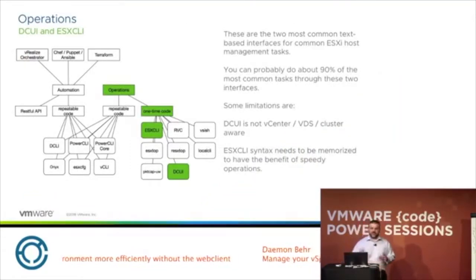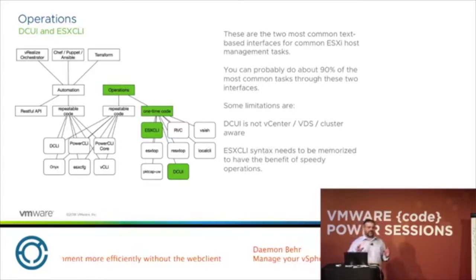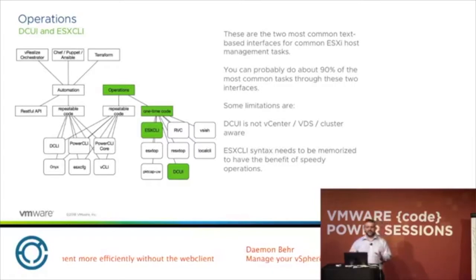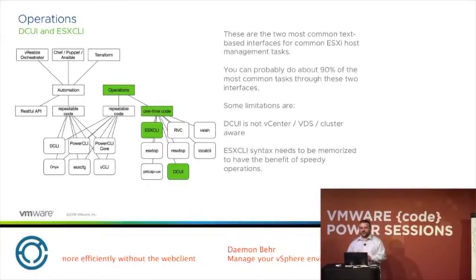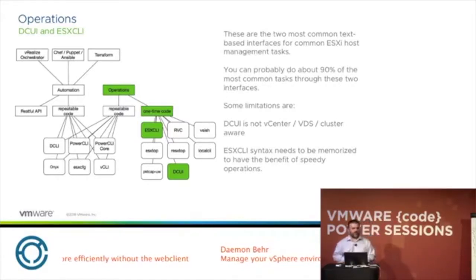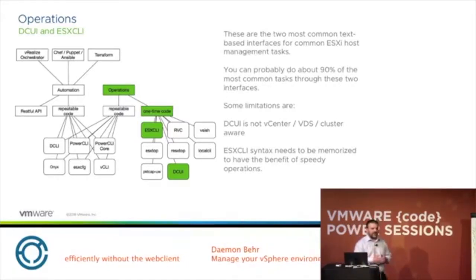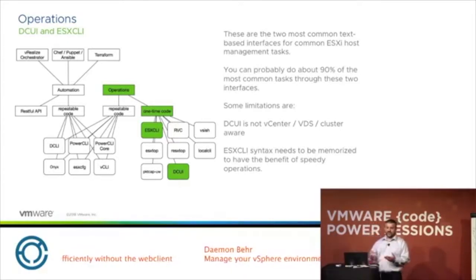Looking at this workflow, I've divided it into two basic areas: an operations area and an automation area. First I'm going to talk about operations — the day-to-day operations where you'd use one-time code, basically the code you memorize, don't have to look up, and become comfortable with for your daily operations.